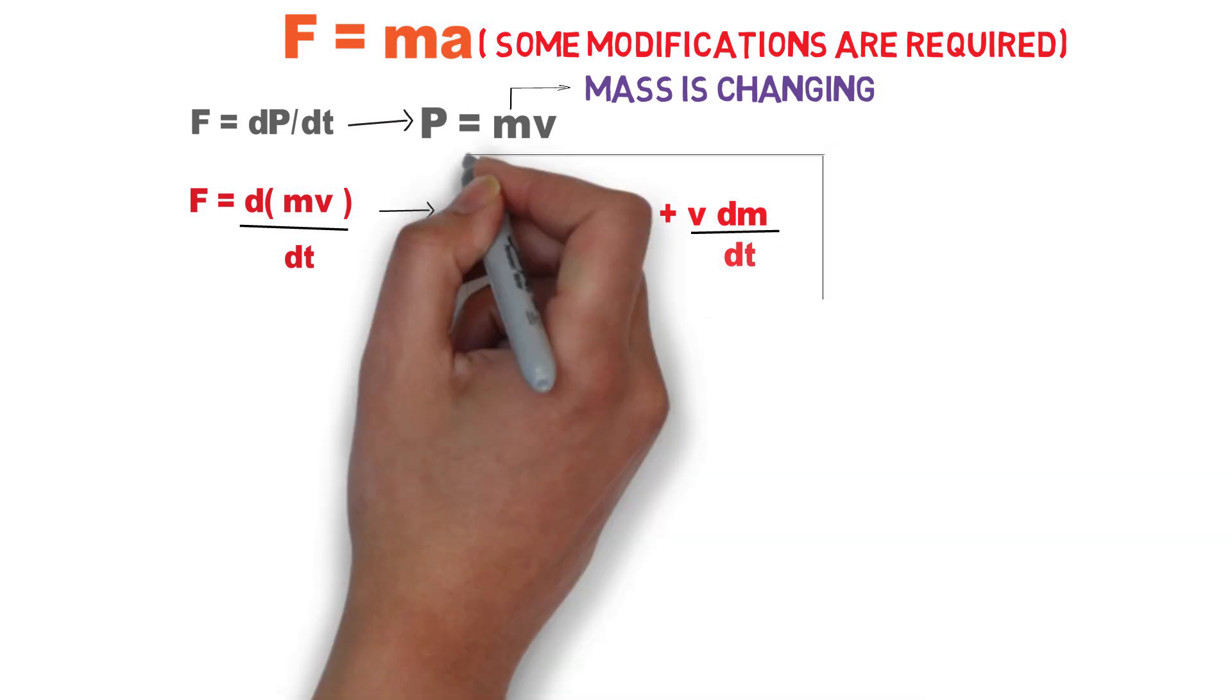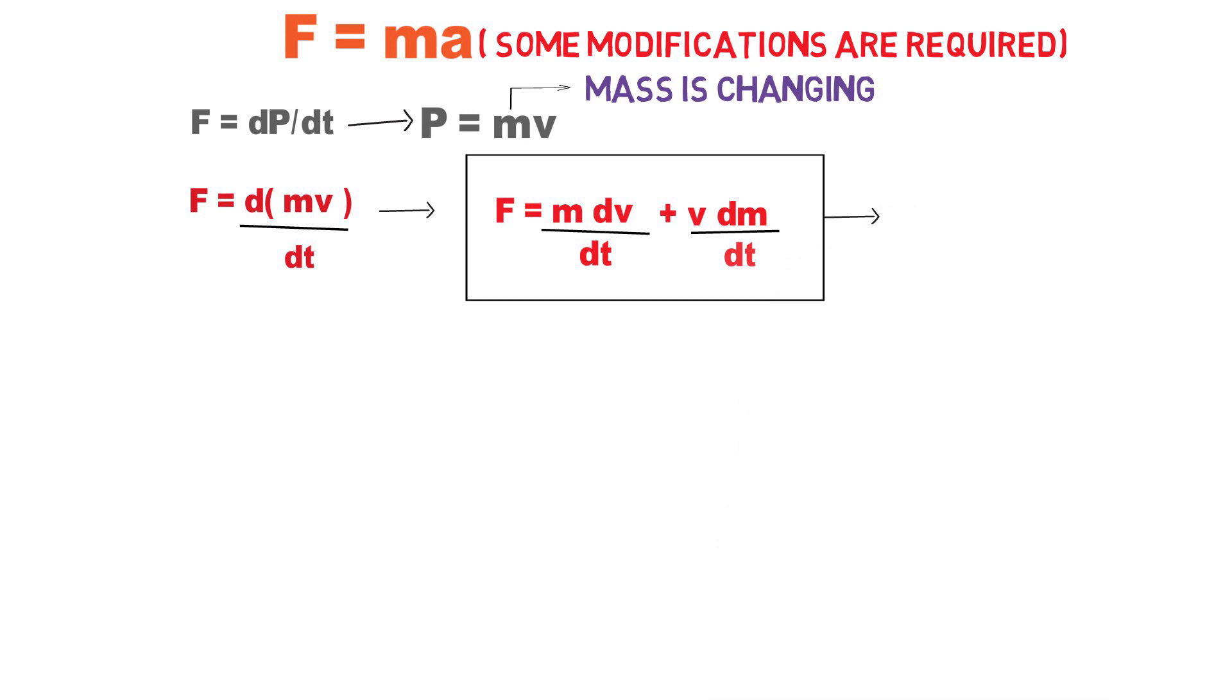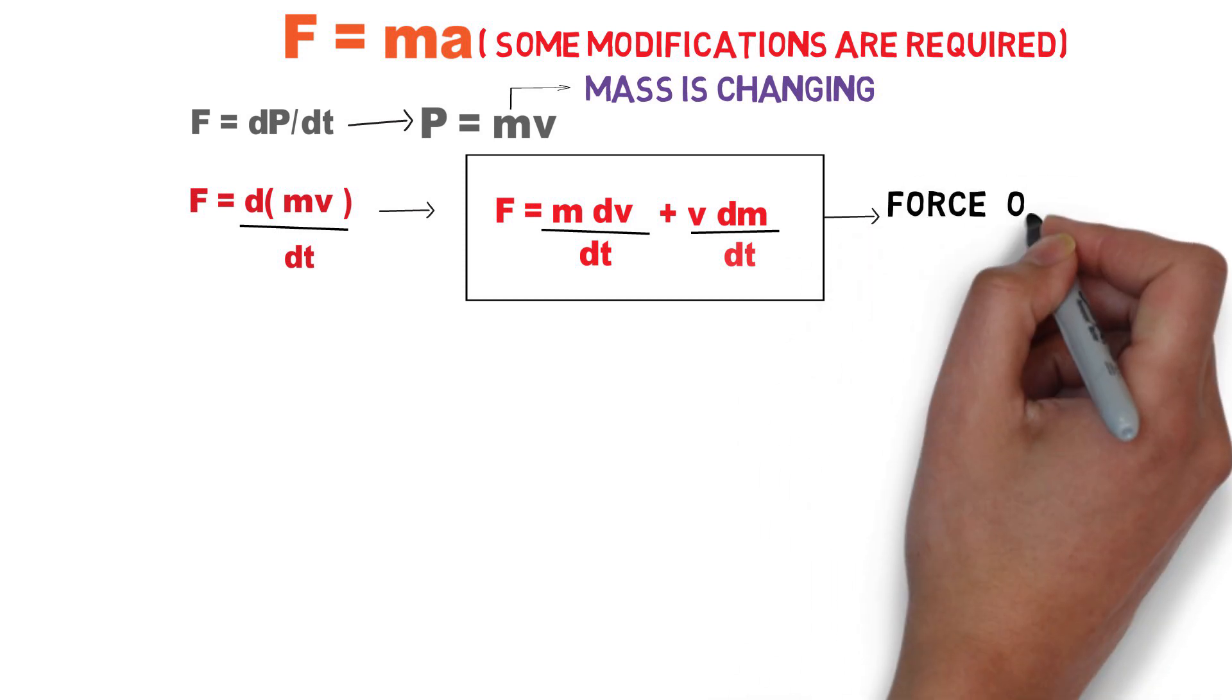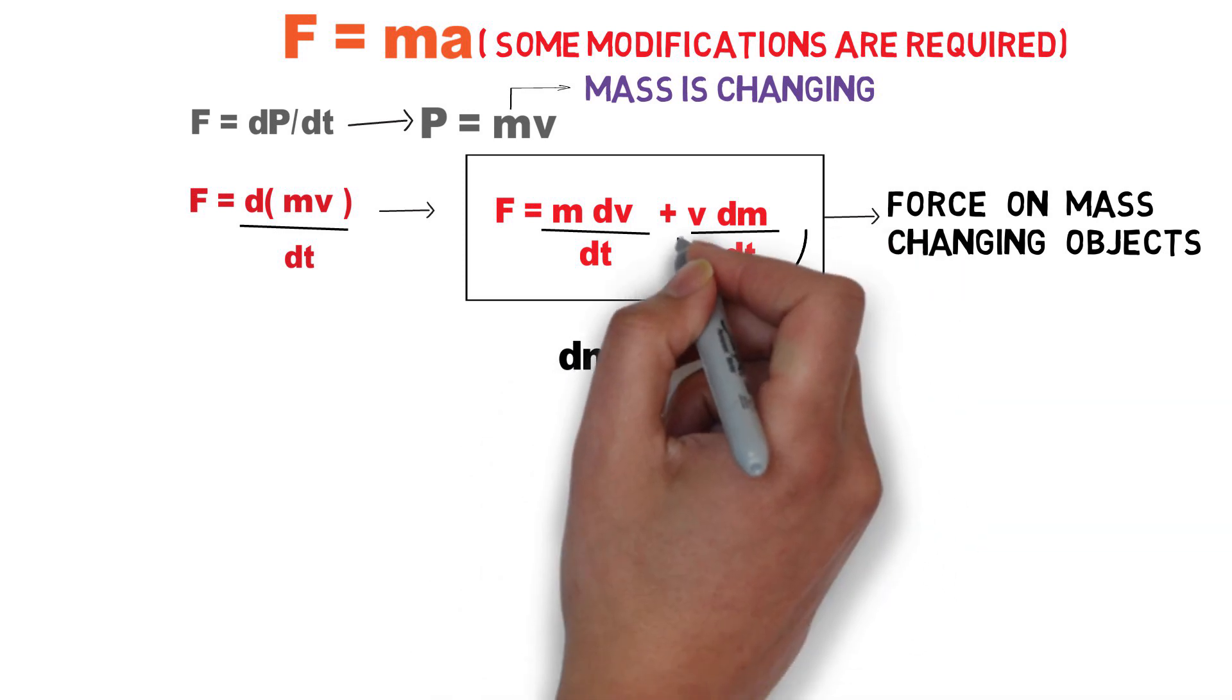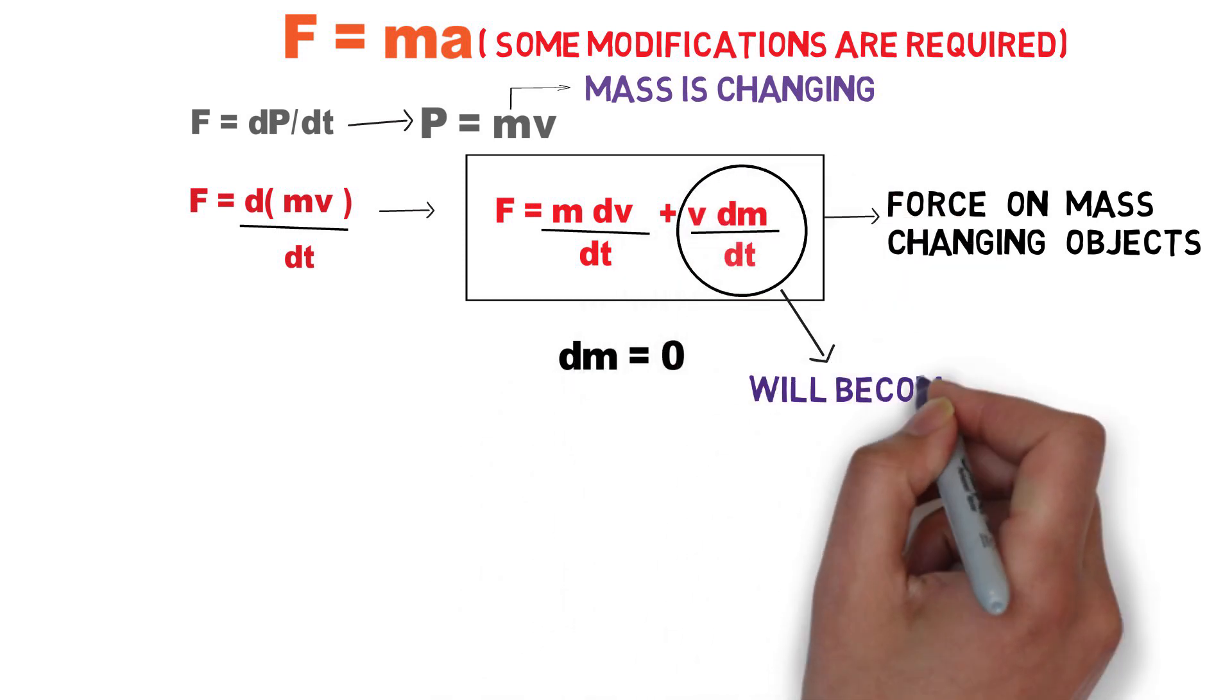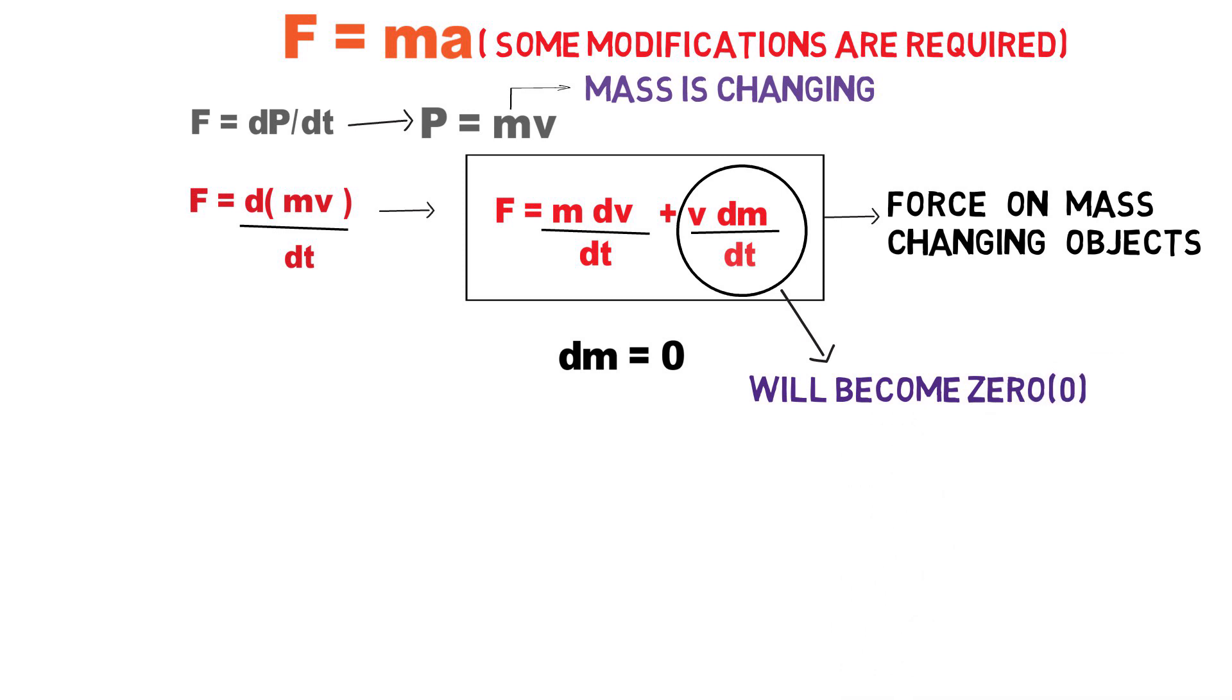This is the equation that can be used to know the force applied on the object whose mass is changing. Now if the mass is constant, then the change in the mass will become zero, and the whole term will become zero because when you multiply zero with something it gives you a zero result.